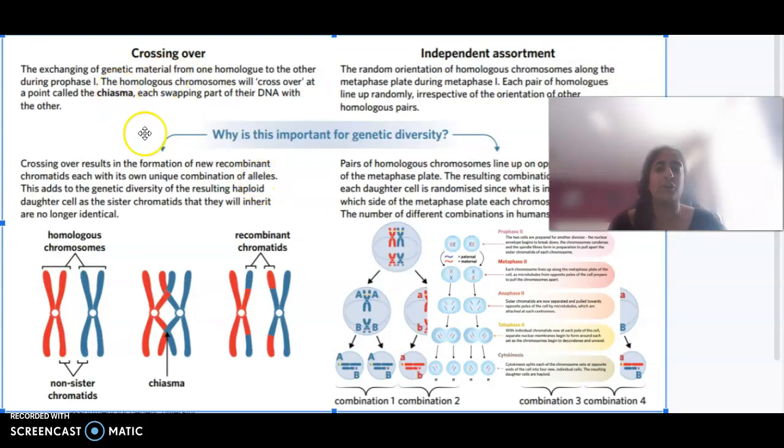With crossing over, that is basically the exchanging of genetic material that's happening. This is where the homologous chromosomes cross over at a particular point called the chiasma. This point here where they're crossing over, we call that the chiasma, and they swap part of their DNA with each other. This forms what we call recombinant chromatids.